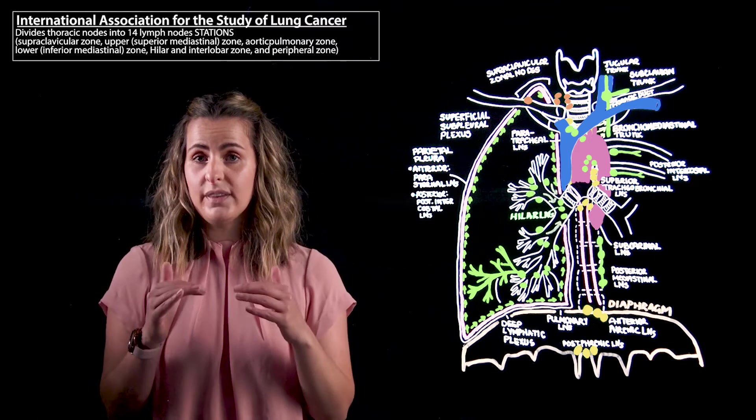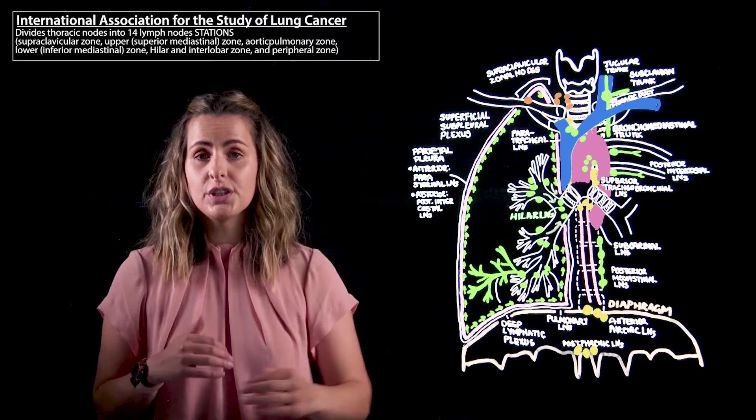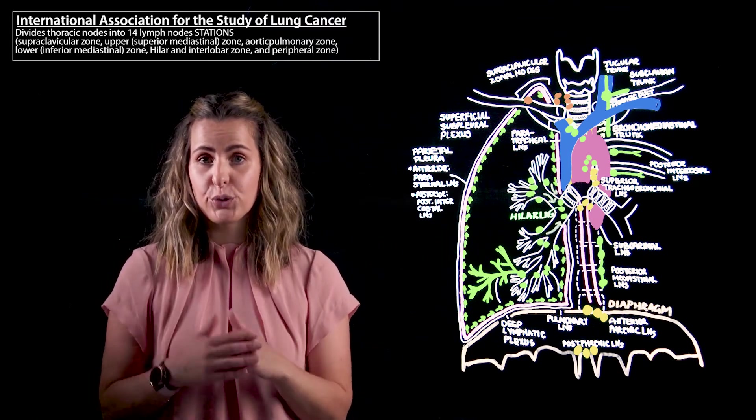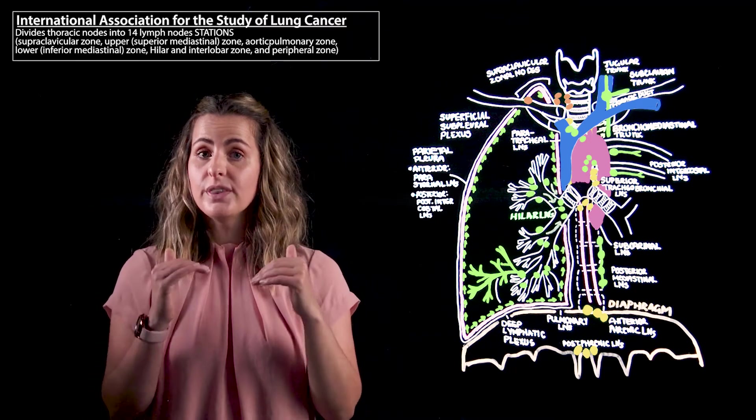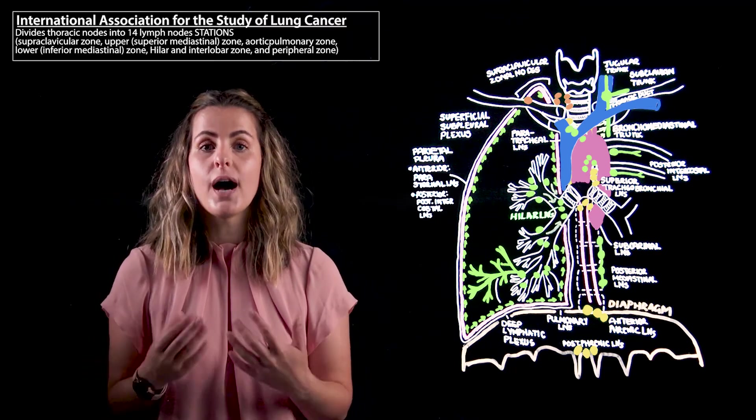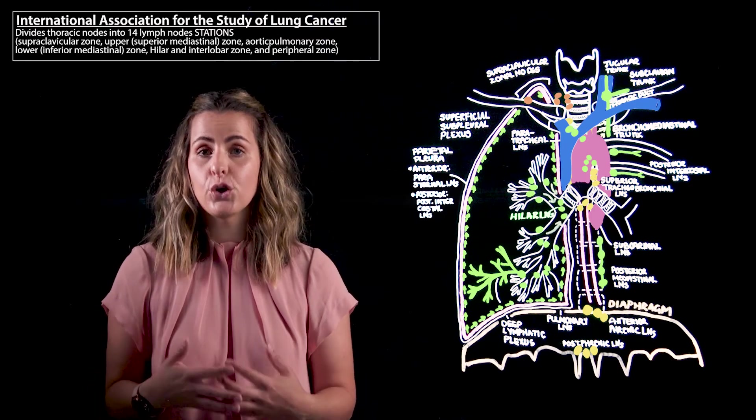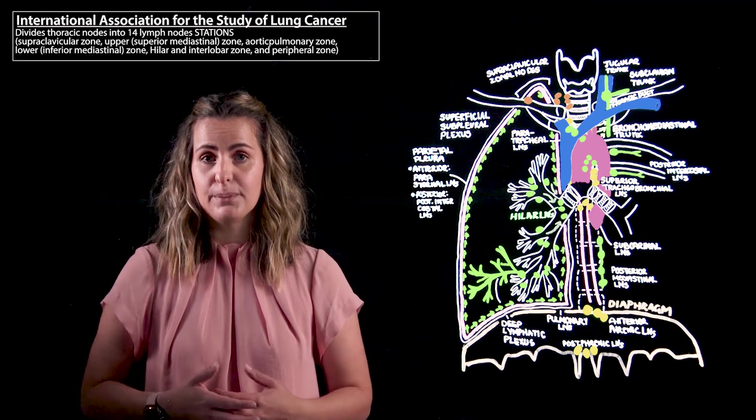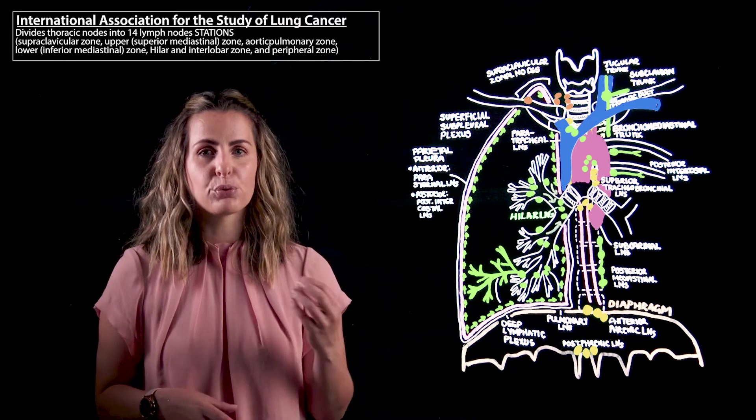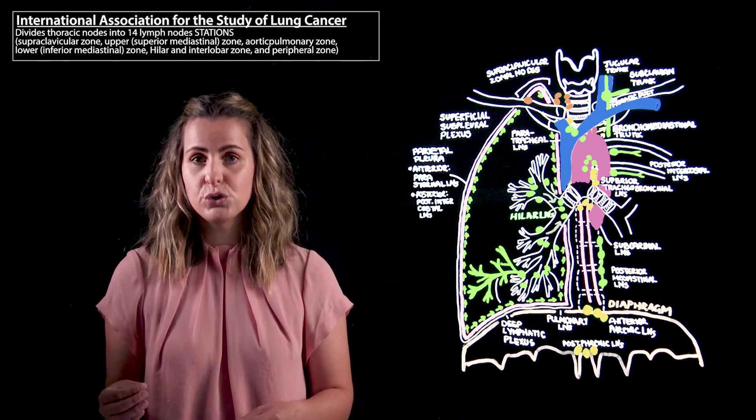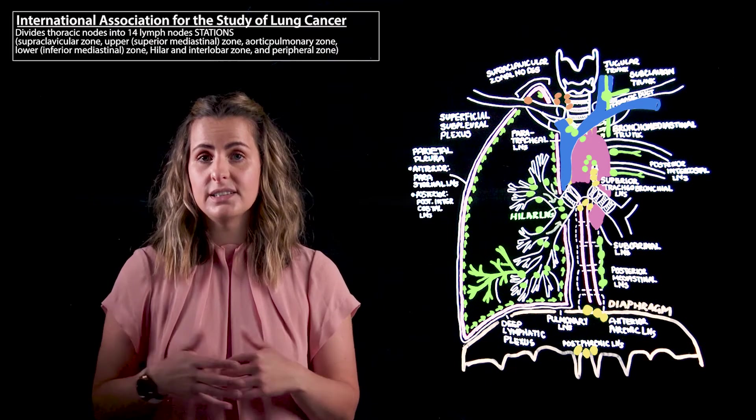Above the upper border of the aortic arch, approximately at that T3 vertebral level, and below the clavicle, we now have our upper paratracheal lymph nodes and these are going to represent the nodes of the superior mediastinum. This also includes our prevascular or retrotracheal nodes, which are going to be behind the trachea.